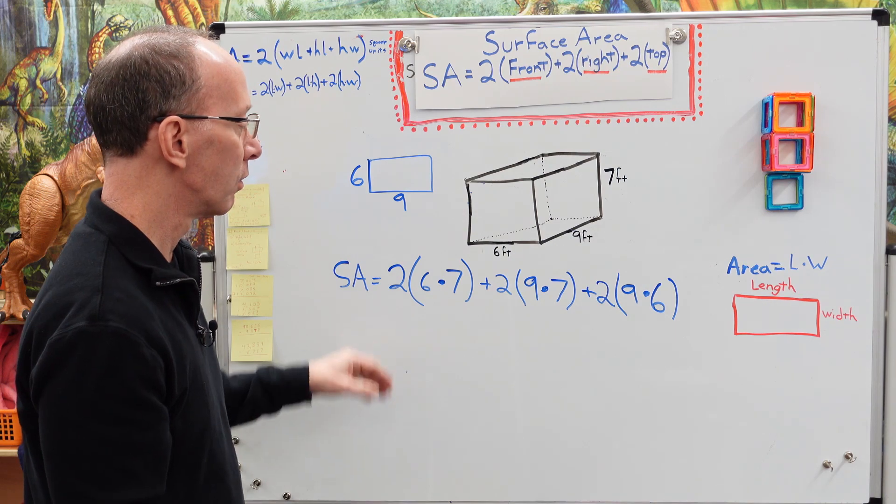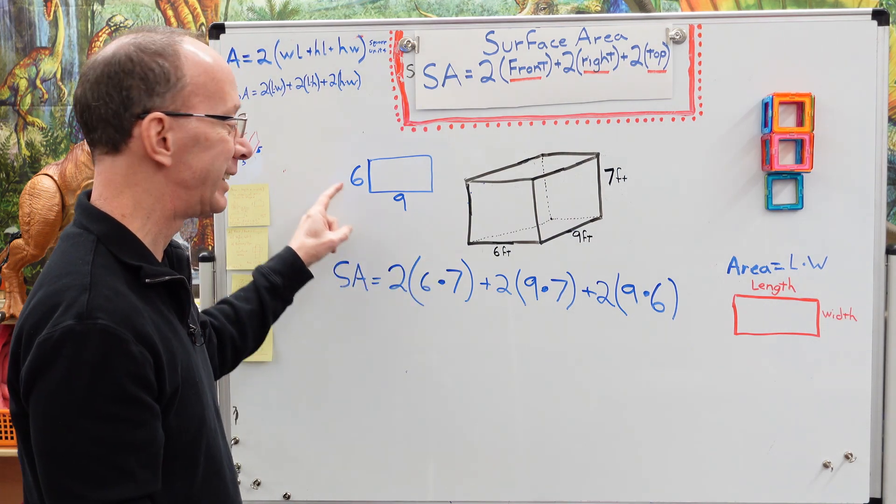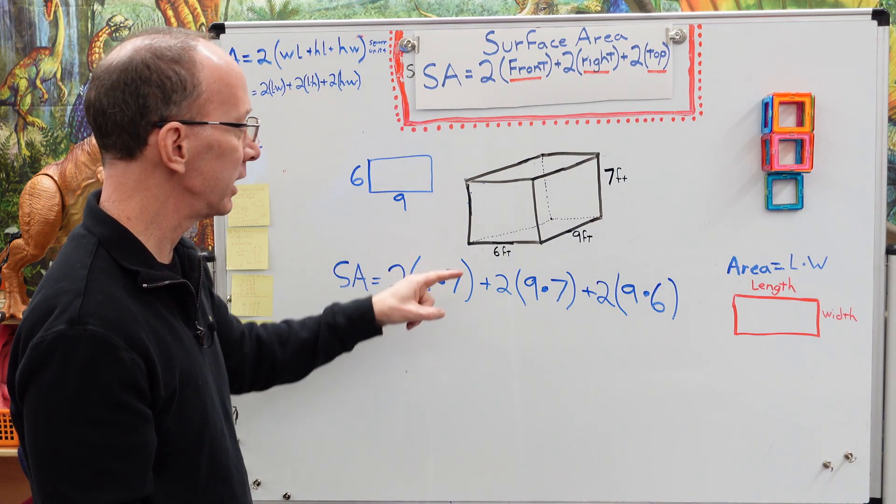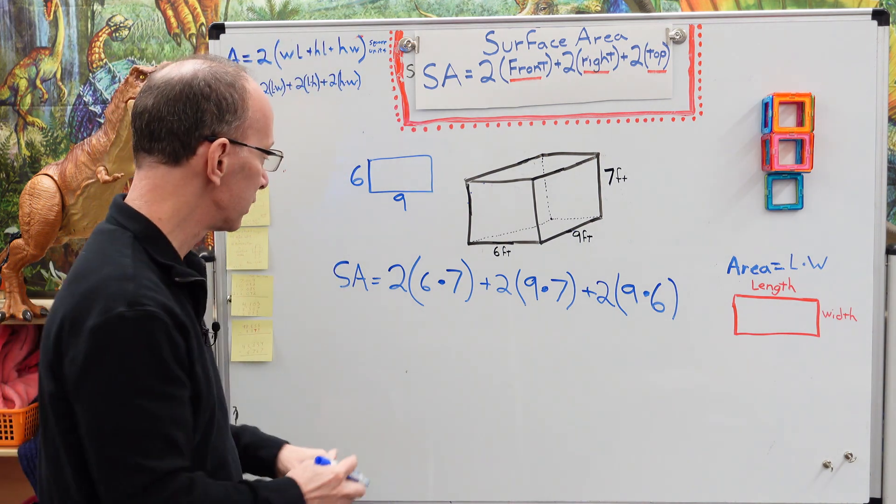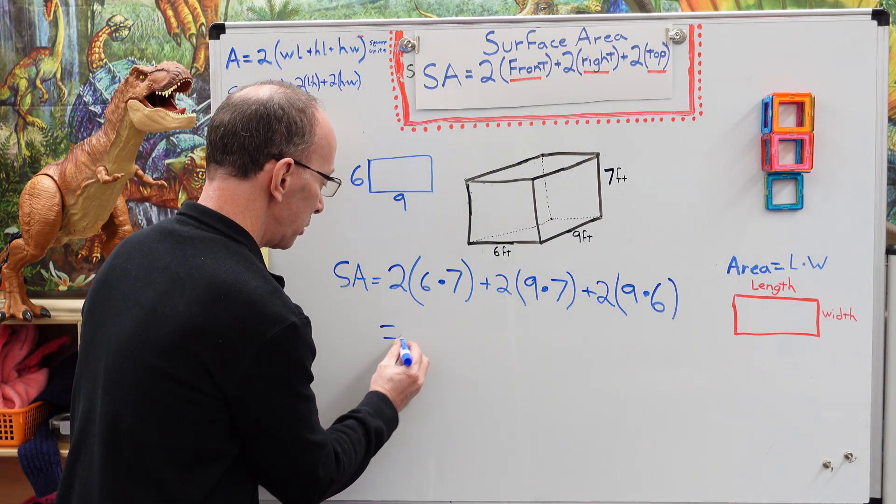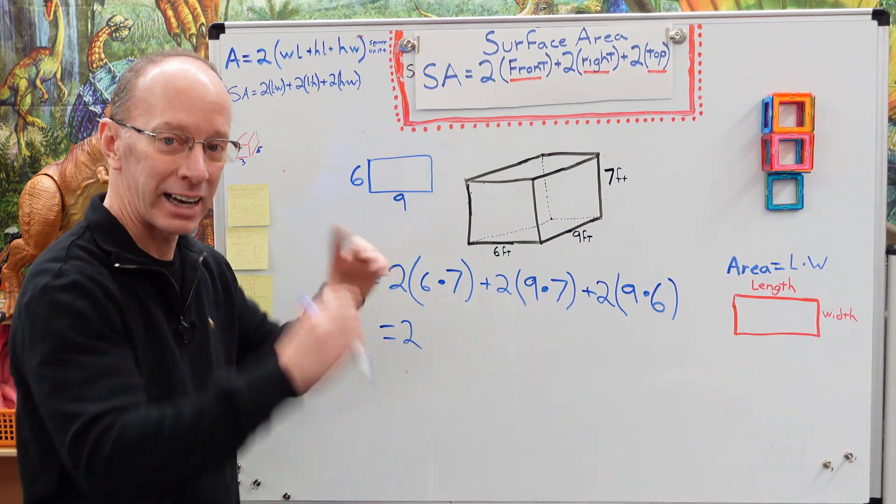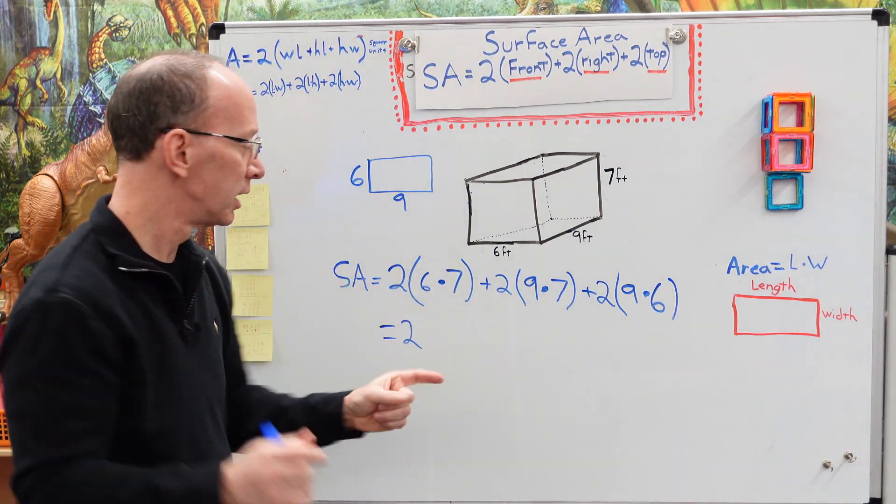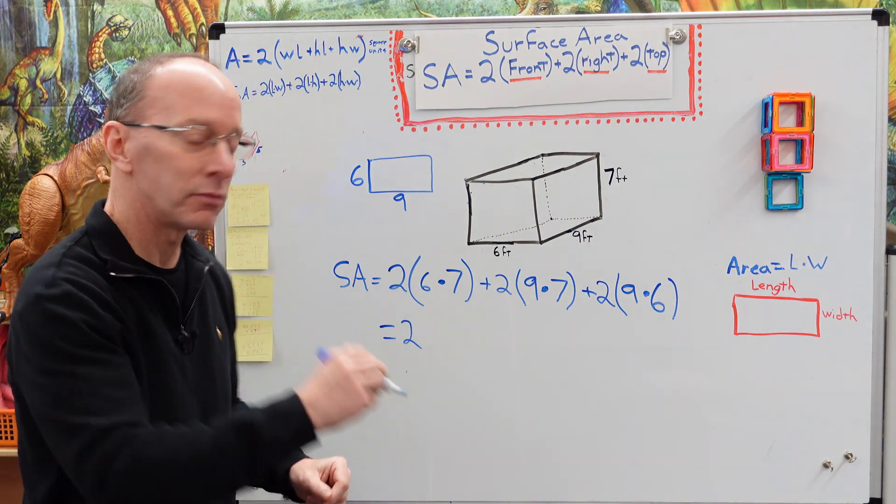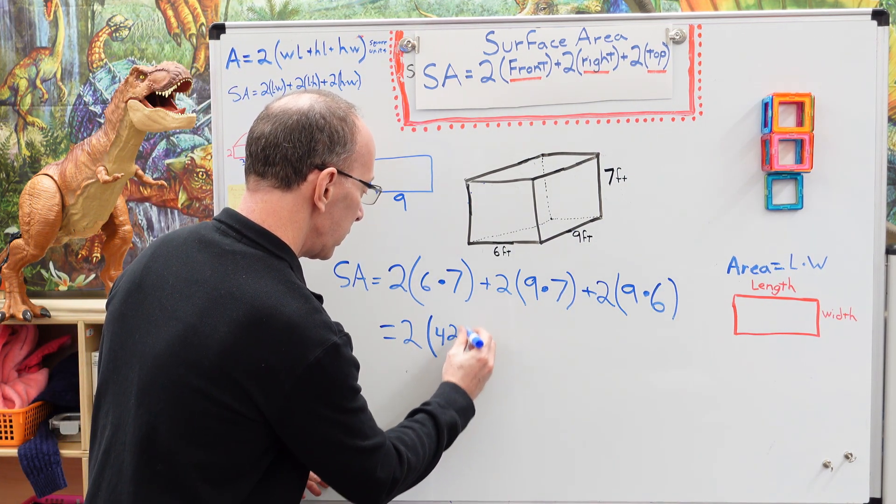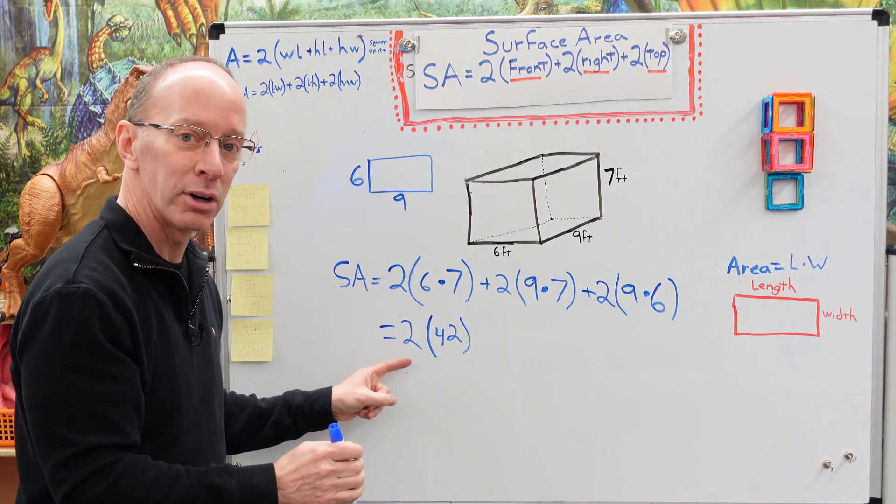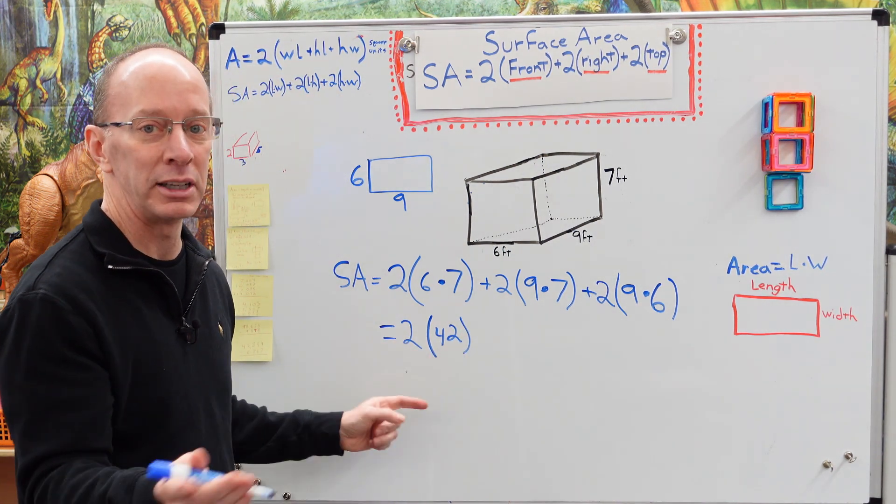All right, so I just want to make sure I did that right. I got the nine. Okay, looks good. So now we're going to go ahead and figure this out. So I'm going to go ahead and put two and I'm going to work inside the parentheses. We do that first. So six times seven, 42. Very good. All right.